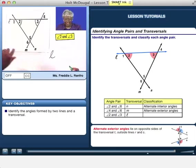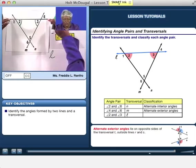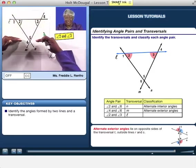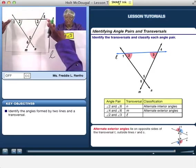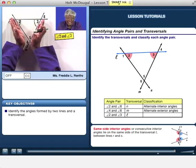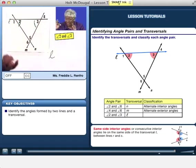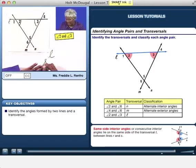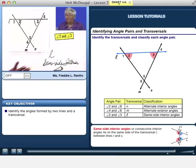And notice, if this is the transversal, 2 and 3 are on the same side of the transversal. And they're also interior, inside of both of these two lines. So what are they called? Same side interior angles.